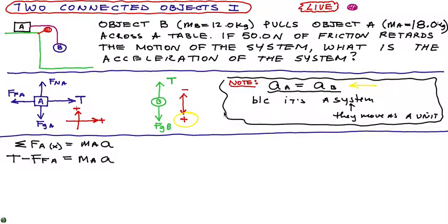And that's equal to MA. And we can plug in some numbers. I don't know the tension, but I do know we have 50 Newtons of friction. And the mass of A is 18.0. And that's the best I can do. So that equation describes the motion of block A in the x direction.